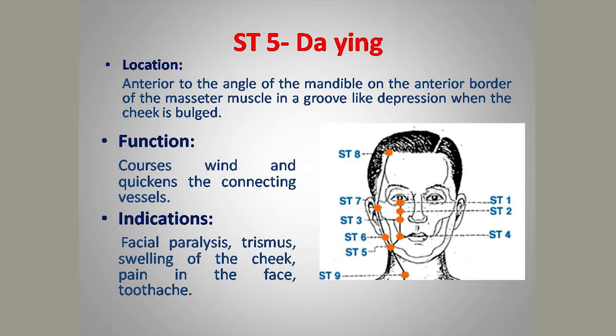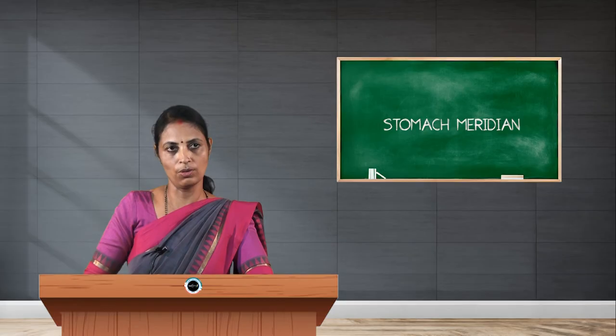Stomach 5, Daying, is located anterior to the angle of the mandible, on the anterior border of the masseter muscle, in a groove-like depression when the cheek is bulged. This point is also used to treat paralysis of the facial muscle and facial nerve, as well as trigeminal neuralgia.